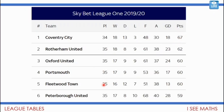Let's have a look at Fleetwood Town. They've played 35 matches, they've won 16 — so three points for each of those 16 matches — they drew 12, getting one point for each draw, and they've lost seven matches. They've scored 51 goals and conceded 38 goals, which meant they have 60 points in total.